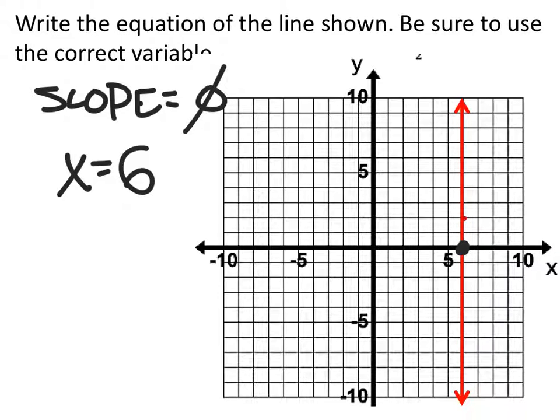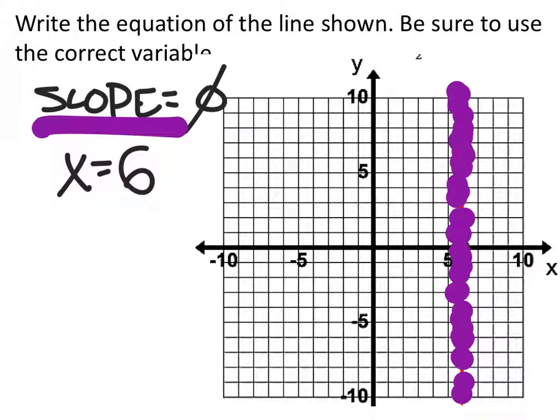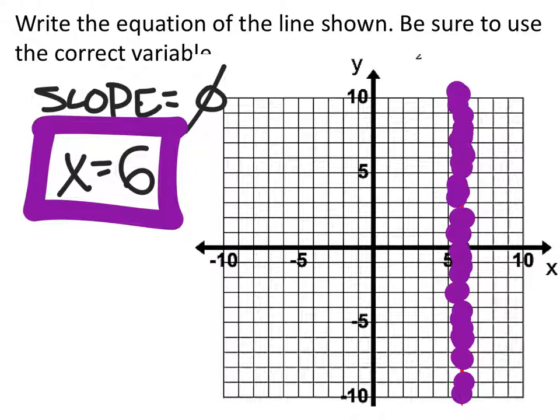x is 6 at this point, at this point, all of these points, okay? Anywhere on the line here, and these are supposed to be right on the line, it's going to have an x value of 6. So as it turns out, that's just our final equation.